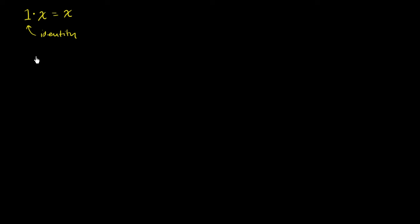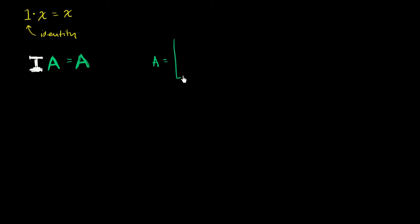To make that more concrete: is there some matrix I that, if I were to multiply it times any other matrix A, the resulting product is going to be matrix A again — by the standard conventions of matrix multiplication? Let's take a concrete example. Let our matrix A be a 3 by 3 matrix: 1, 2, 3, 4, 5, 6, 7, 8, 9.